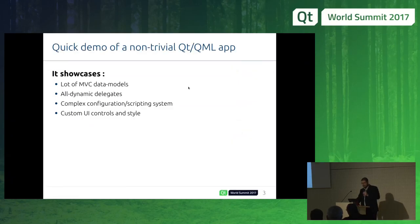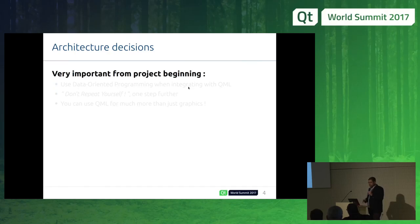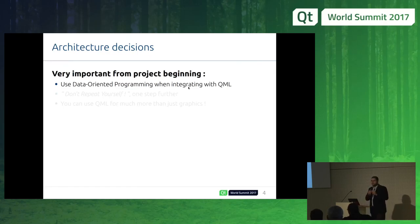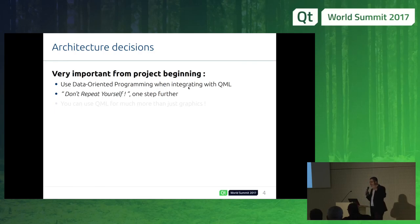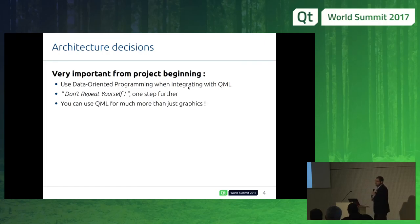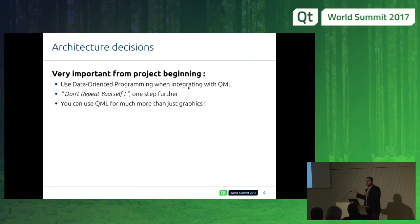So how is it possible? That's because I took some very important decisions from the start of the project. I will use not object-oriented programming but data-oriented programming — I'll tell the difference later. Also, I have pushed the don't-repeat-yourself rule, but a bit further — maybe too far, maybe. Because I am very strict about not repeating myself in the code. And also I try to exploit QML at most — don't just use it for Qt Quick, you can use it for a lot more things.